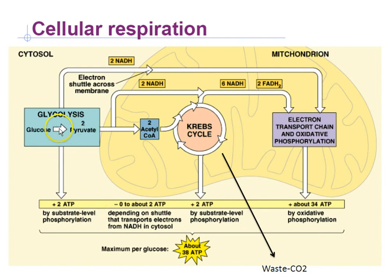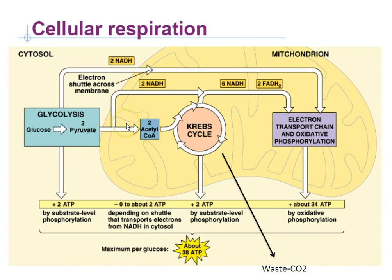At the end of glycolysis — all catalyzed by enzymes, proteins — we're going to have two pyruvate. Think of a pyruvate as a sugar broken in two with some of its electrons missing and some of its energy gone. Those two pyruvate are going to enter the next step, called the Krebs cycle.